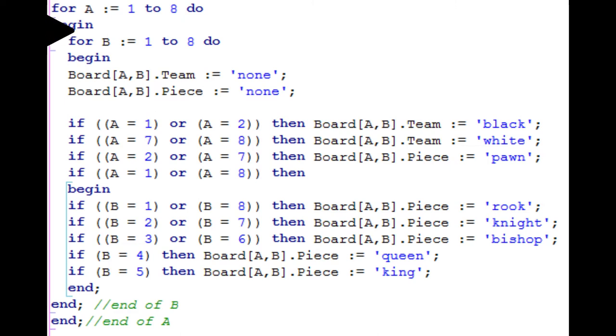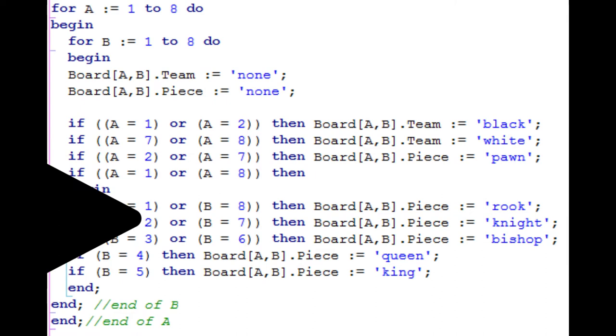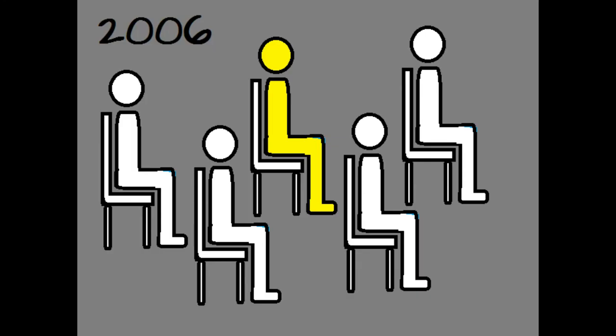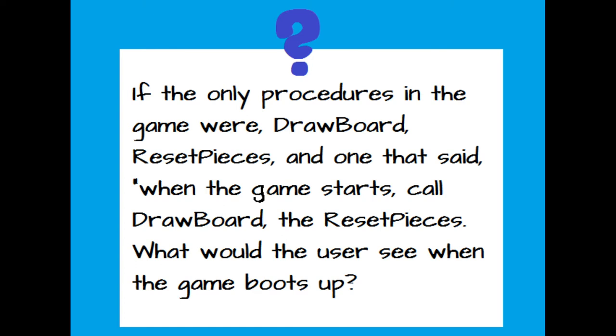For every row, and for every square of each row, do the following. Forget the previous game. Set the current tile to Unoccupied. The top two rows have black pieces in them. The bottom two rows have white pieces in them. The second and seventh rows have pawns in them. The top and bottom rows are the ones with interesting pieces, so if you're in one of those, here are where the rooks, knights, bishops, queen, and king go. Now, question for you, 2006 Kendra. If the only procedures in the game were Draw Board, Reset Pieces, and one that said when the game starts, call Draw Board and Reset Pieces, what would the user see when the game boots up?